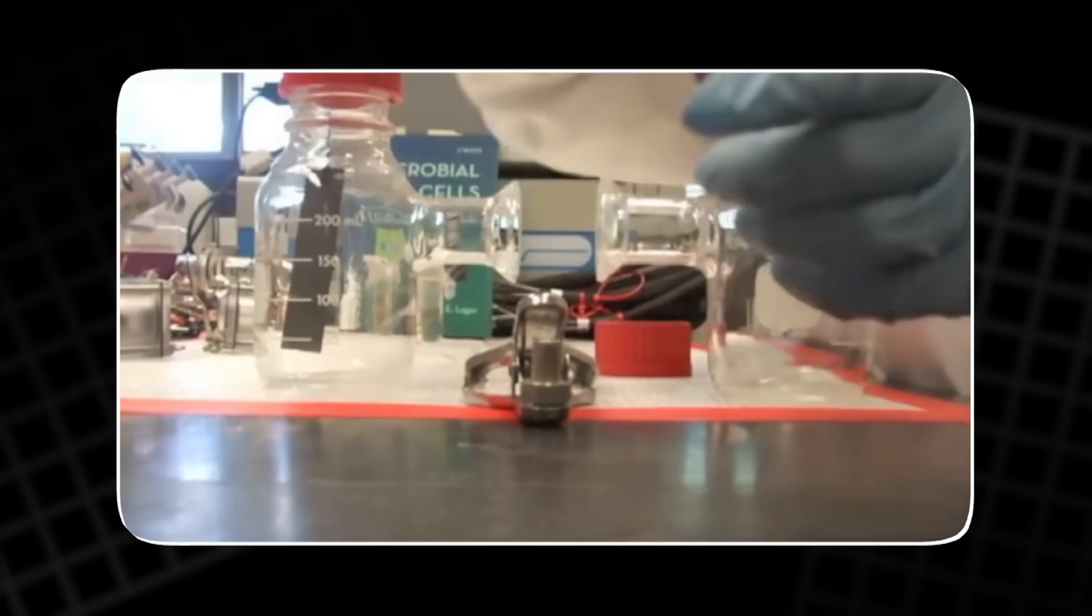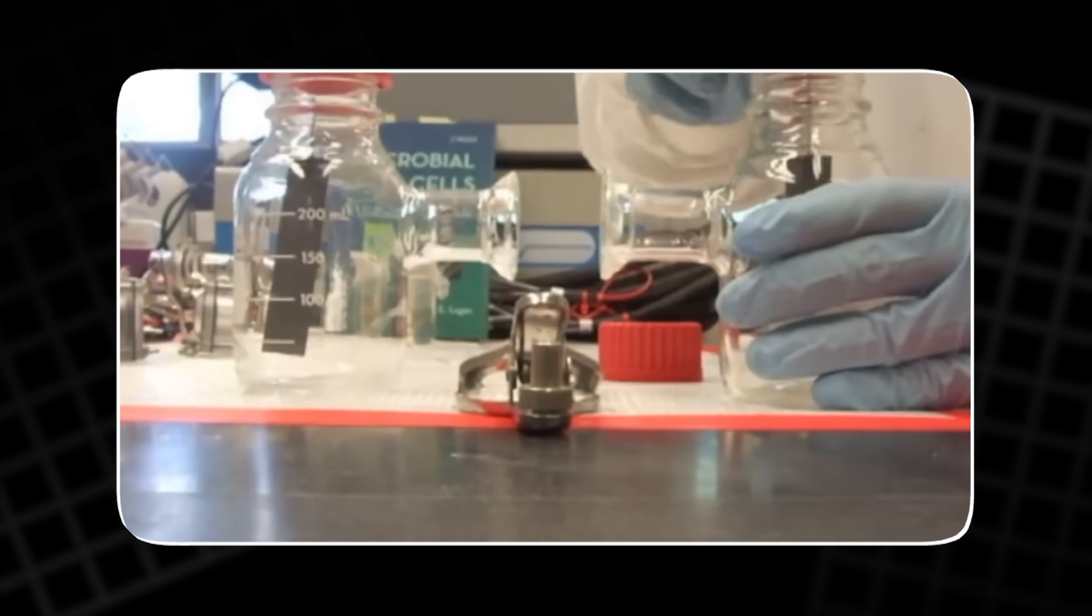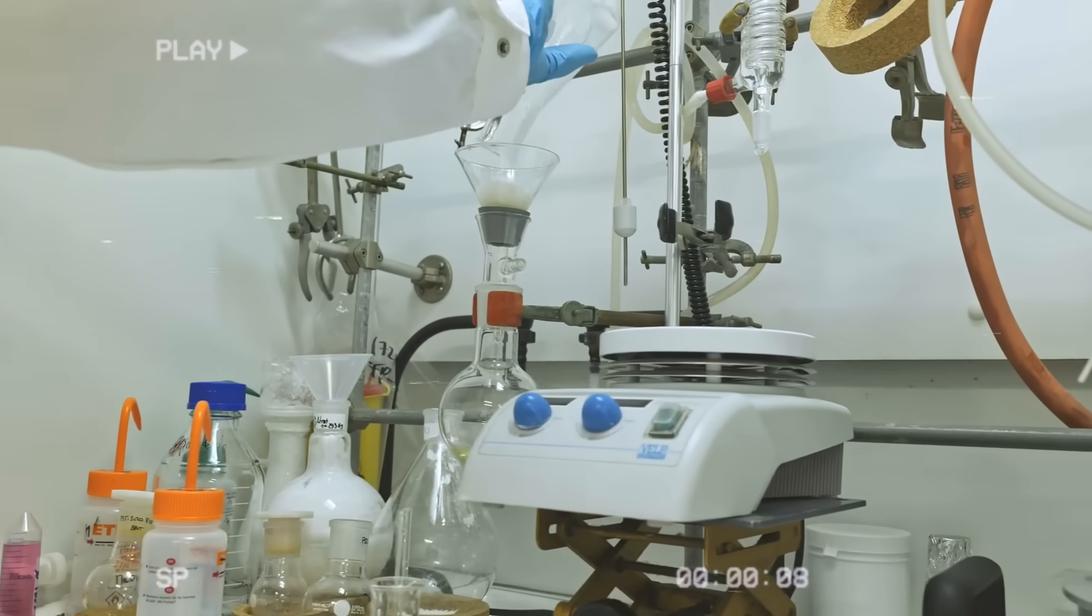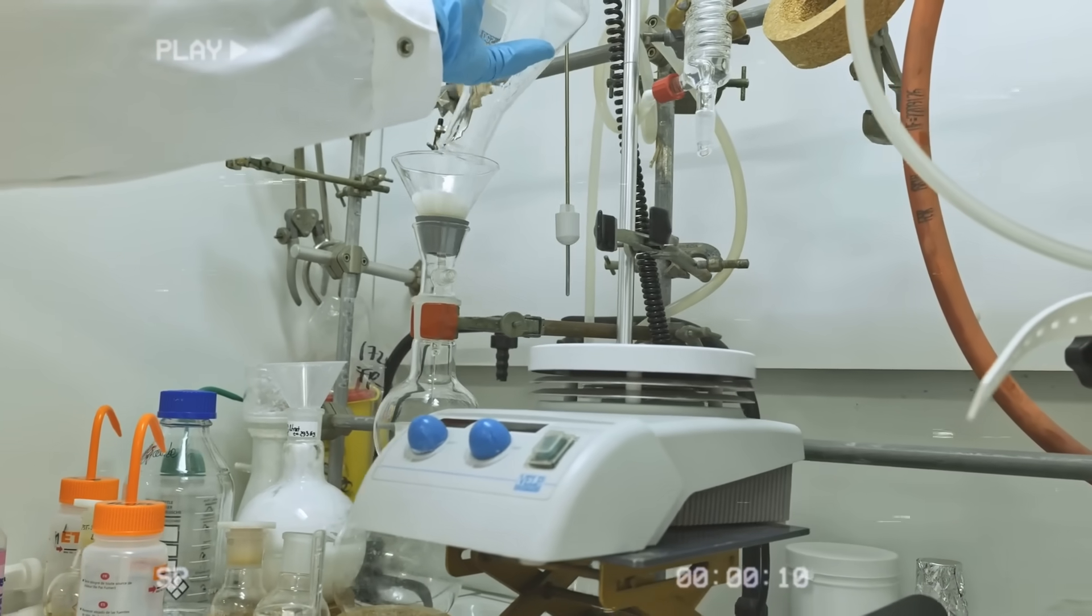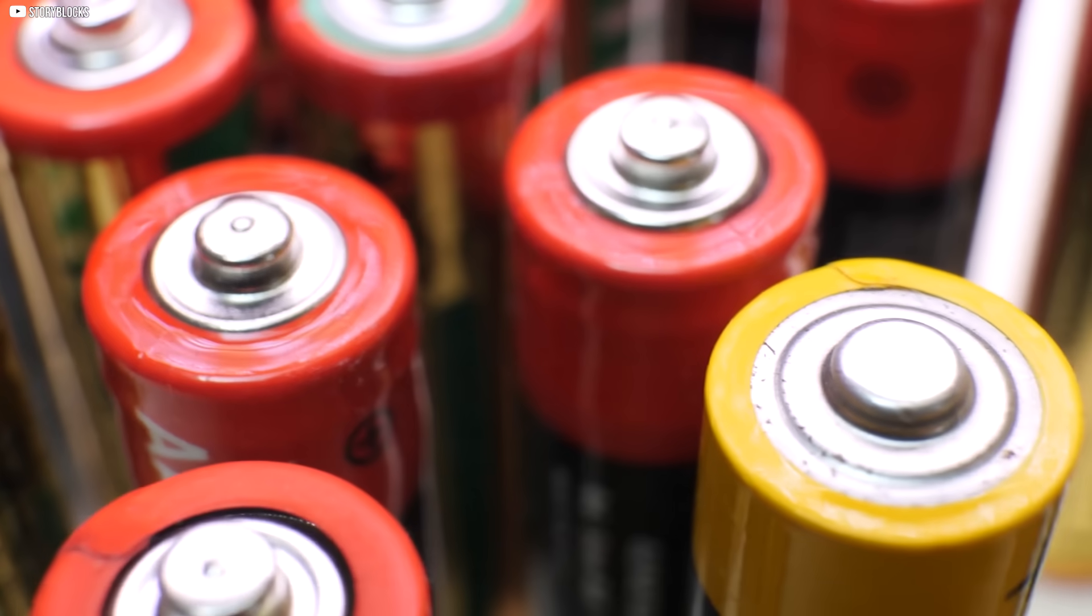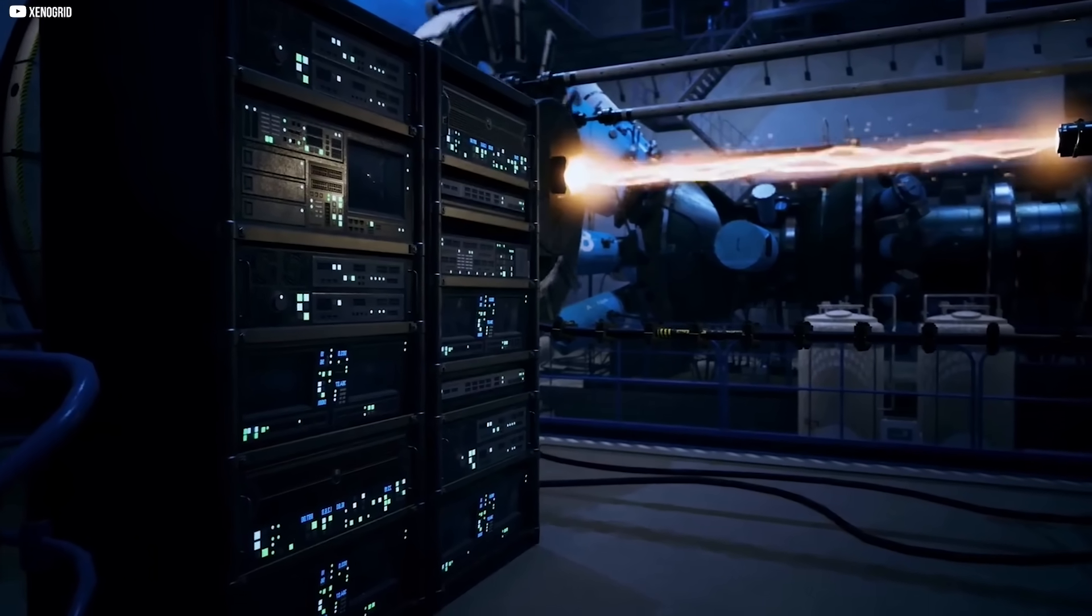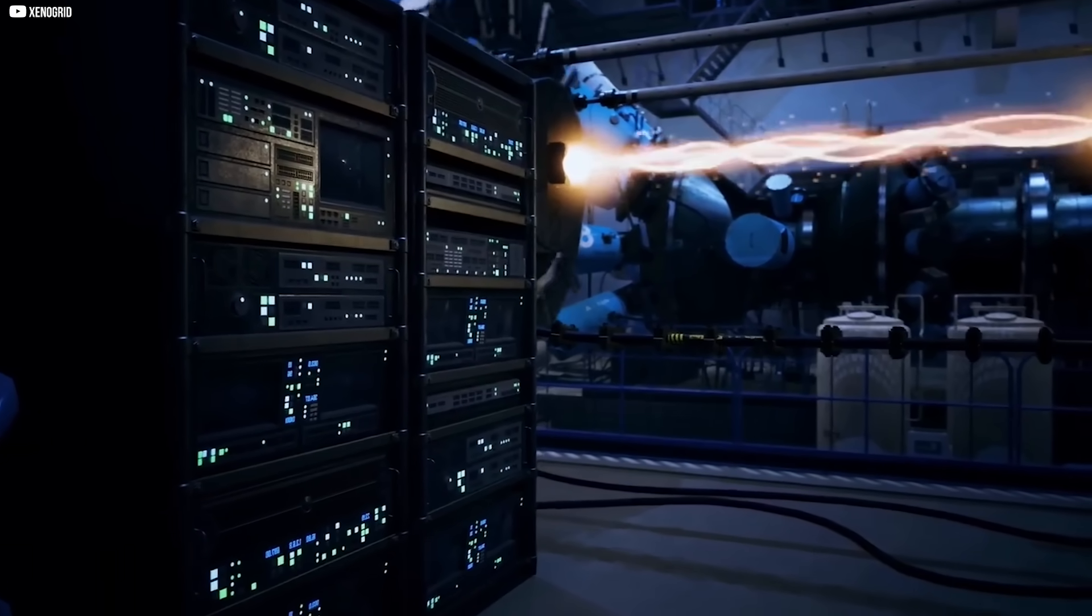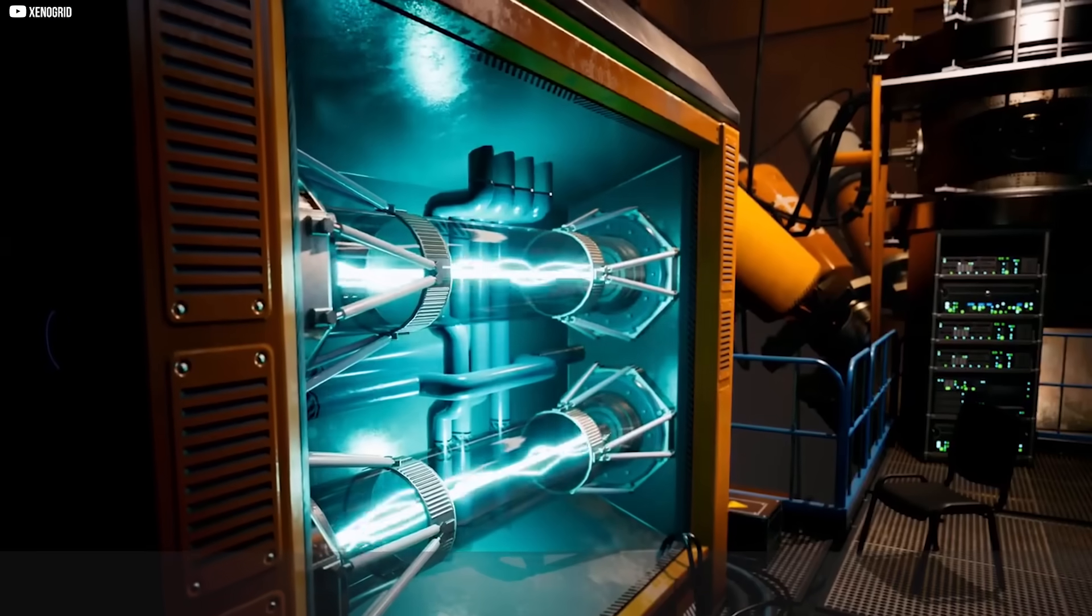On the top sits solid sodium metal, which acts as the fuel. In the middle, there's a solid electrolyte made of beta-alumina, an older material originally developed for sodium-sulfur batteries. On the bottom, a porous nickel-based foam collects the electricity and allows air to pass through.